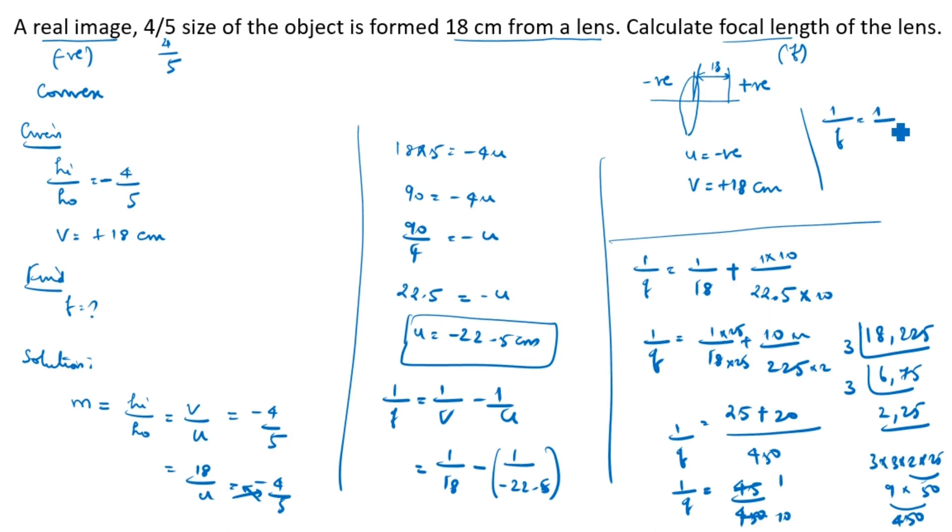1/f is equal to 1/10. F is equal to 10 centimeters. So what's 10 centimeters plus? So f comes to 10. F is comes this side. Here is 10. Thanks for watching this video.